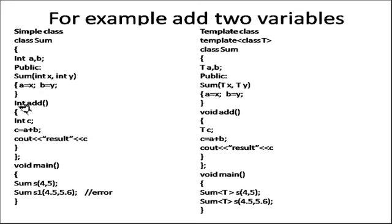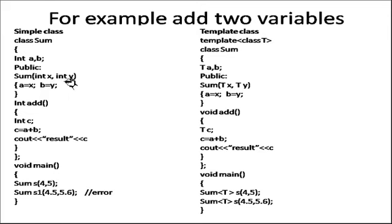We can remove 'int' and use 'void' here. In the void main function, we are calling with two objects containing S(4, 5), so that is acceptable. However, if you are passing a float value to this class, it is not acceptable by this constructor — we need to declare one more constructor with float type variables.